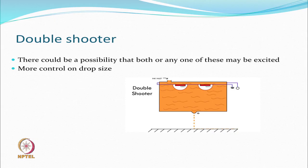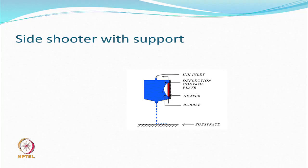The piezo-based system is called the other approach — both are being used. One can also have double shooters, either at the top or at the bottom. The bubble size can be controlled because the area of the heating element may differ. If more volume is needed, both heaters may operate; if less volume is needed, only one operates — giving additional control over the droplet size.